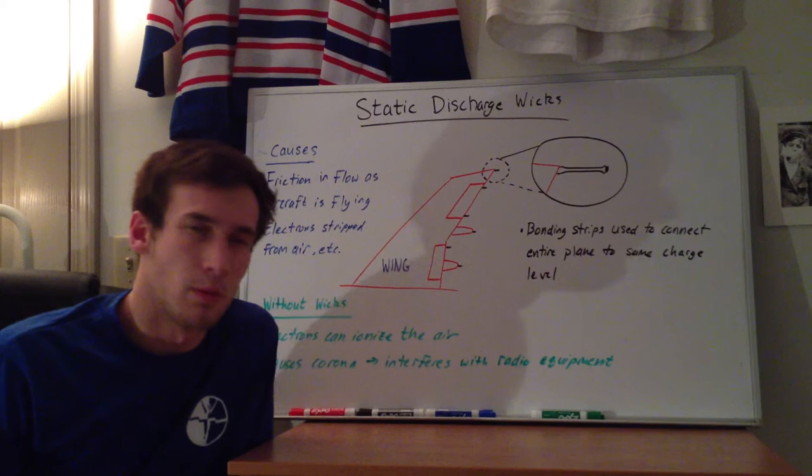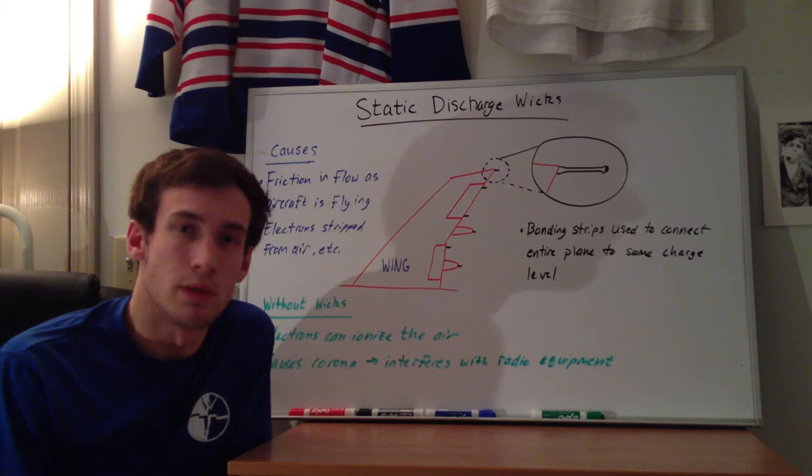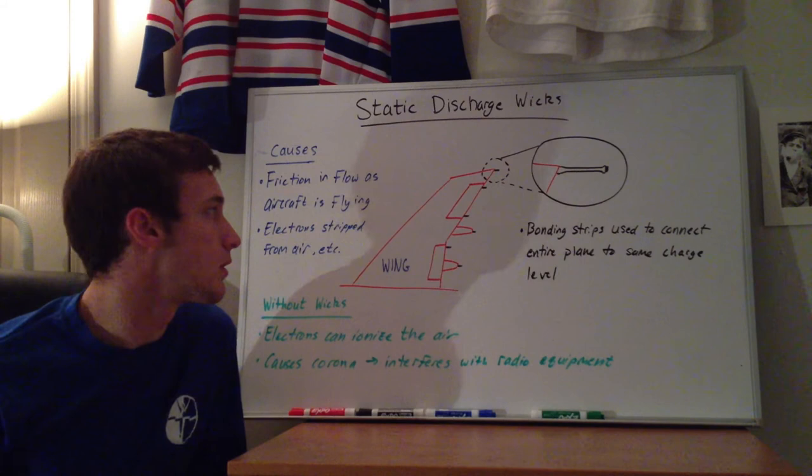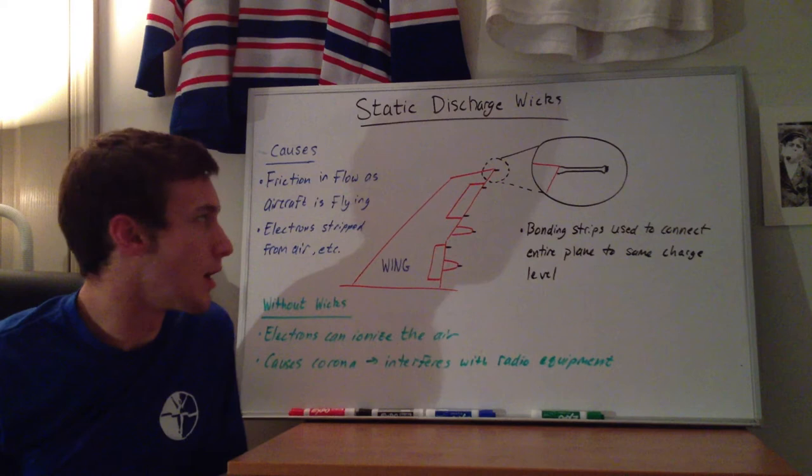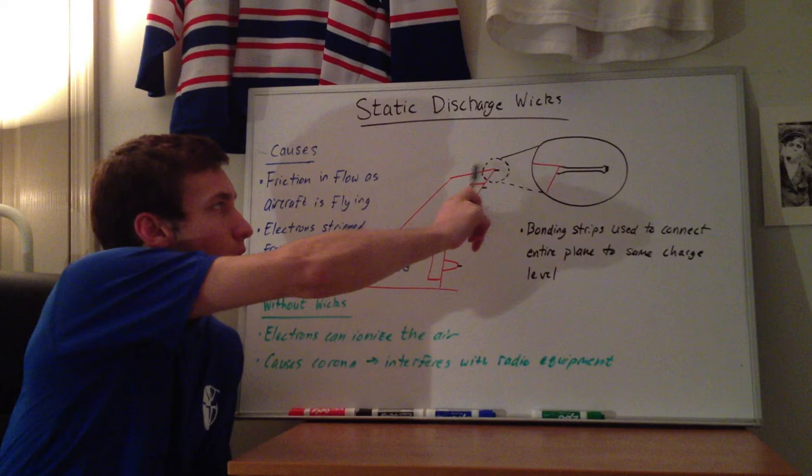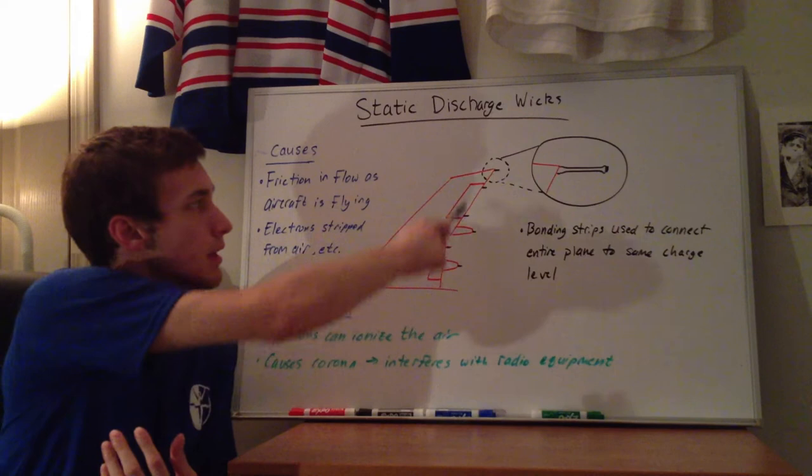In this video I'm going to be talking about static discharge wicks, which are found on pretty much all forms of aircraft. You've probably seen them when you look out your window when you're on a flight. I drew them as these black little things on the aircraft — they're found in other places, but this is just to show the wing. You can see they're found normally towards the wing tip; you can always find them on the ailerons, and they might also be found on the flat track fairings.